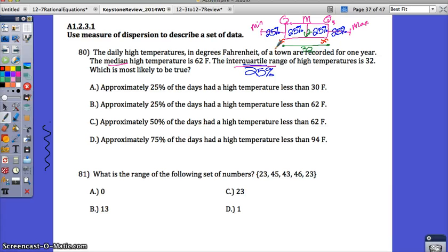Let's just read these options and see what we can come up with. Approximately 25% of the days had a high temp less than 30 degrees. Well, we don't know 30 degrees anywhere. And even so, if this was 30, 25% would have less than that, but Q1 can't be 30 because that would have a range of 32 just from the Q1 to the median, and it has a range of 32 from the Q1 to the Q3. So, cannot be A.